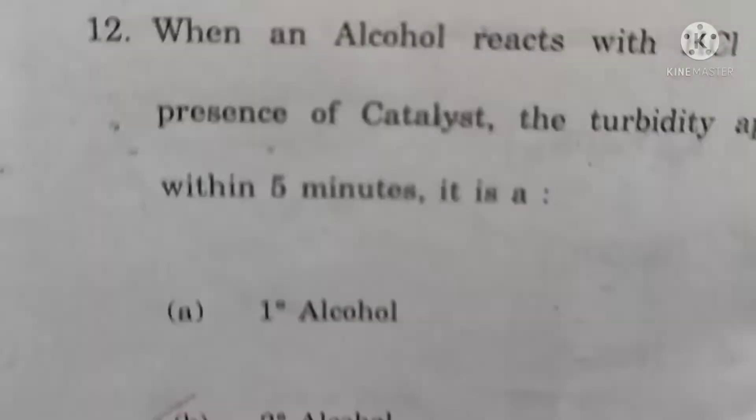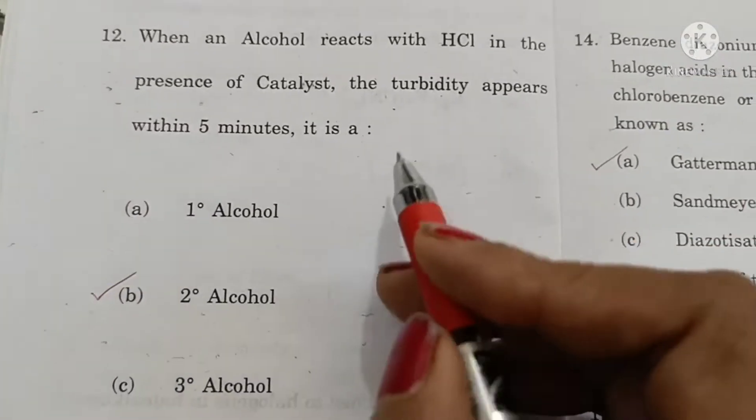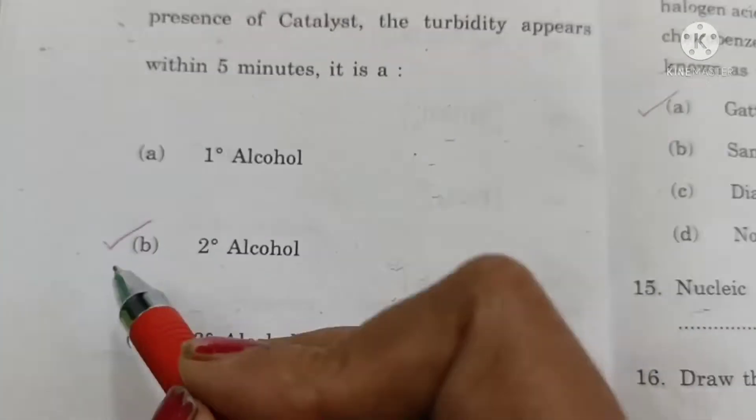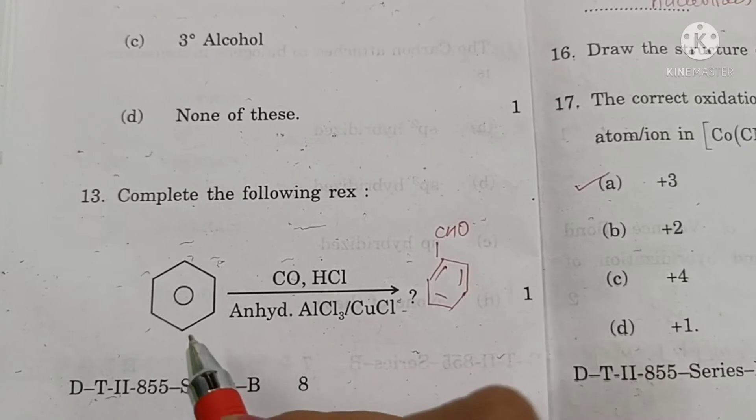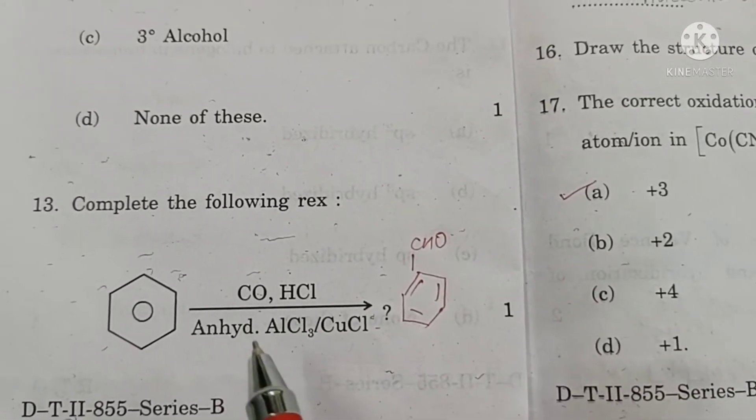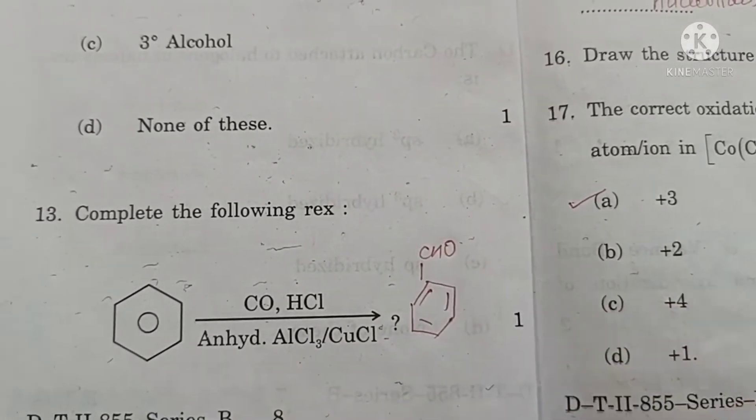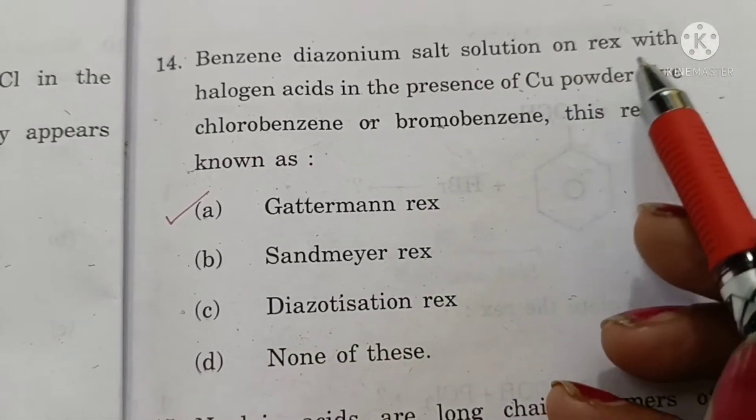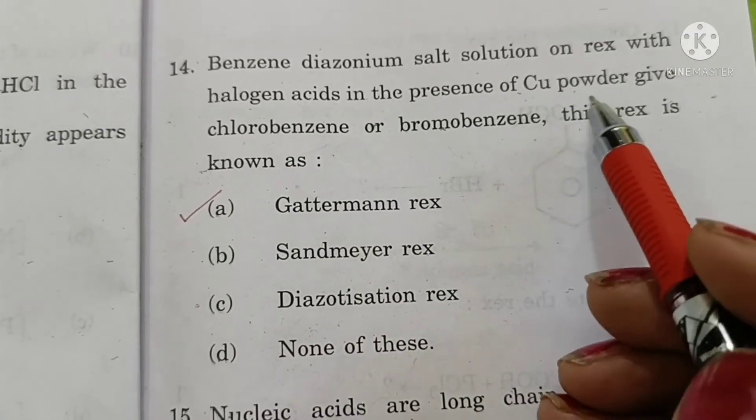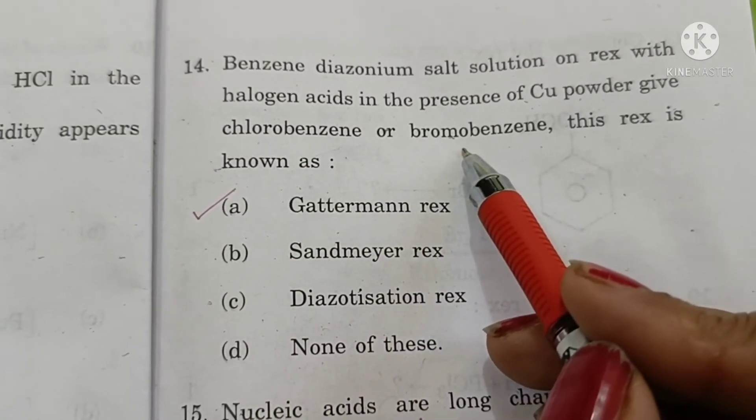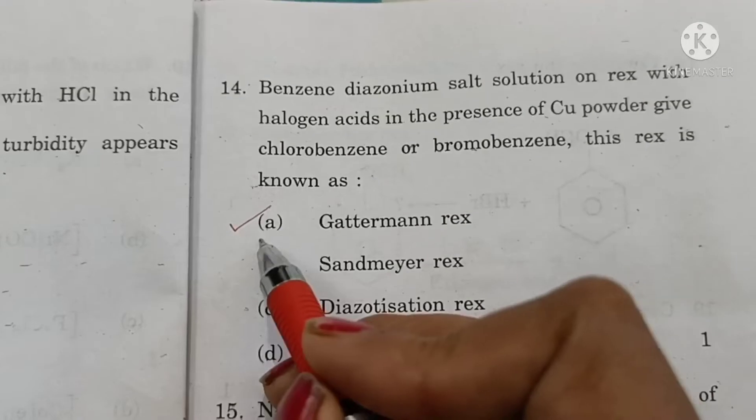Carbon attached to halogens in halo alkane is sp3 hybridized. When an alcohol reacts with HCl in presence of catalyst turbidity appears within 5 minutes, it is a secondary alcohol. Complete the following reaction. This is Gataman-Koch reaction. Benzaldehyde will be formed.